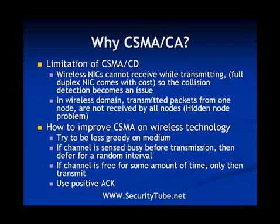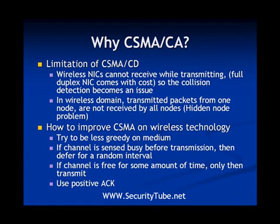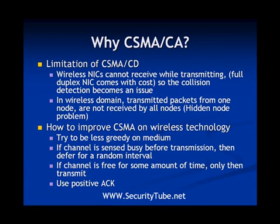In wireless NICs, or wireless network interface cards, they cannot receive while transmitting, so collision detection becomes an issue. In 802.3 or CSMA/CD the network can transmit data, check whether a collision is happening, and then proceed. But in wireless you cannot transmit and receive at the same time, so collision detection becomes a problem.